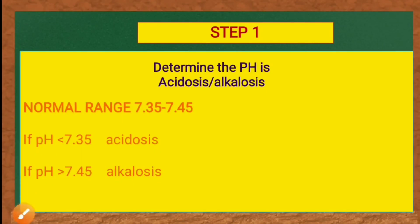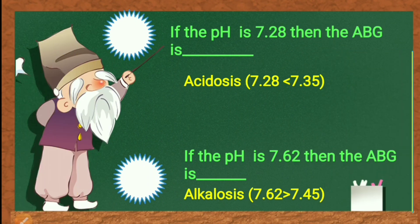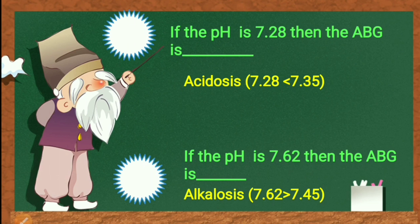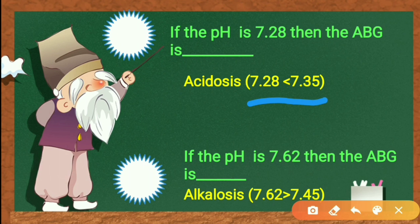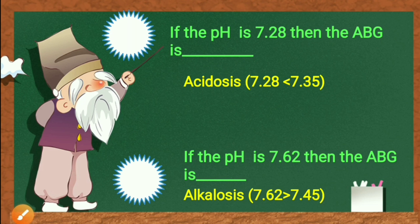Let's try some examples. First question: if the pH is 7.28, then the ABG is — ? Since 7.28 is less than 7.35, it is acidosis. Next question: if the pH is 7.62, then the ABG is — ? Since 7.62 is greater than 7.45, the result is alkalosis.